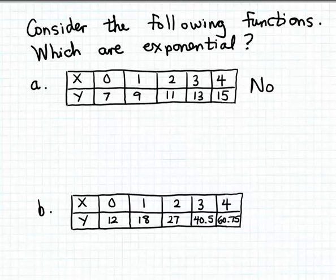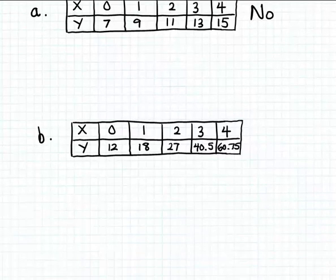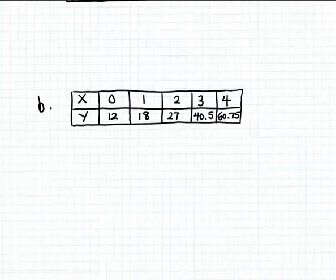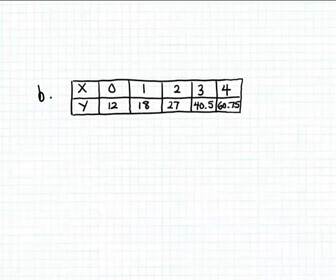Now let's look at the function in part b. Notice that the inputs are increasing by a steady amount of one: 0, 1, 2, 3, 4. But notice that the outputs are not increasing by a steady amount.